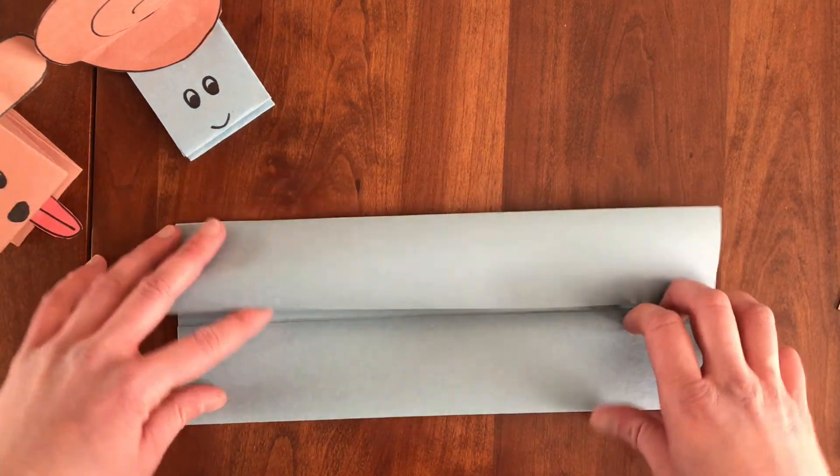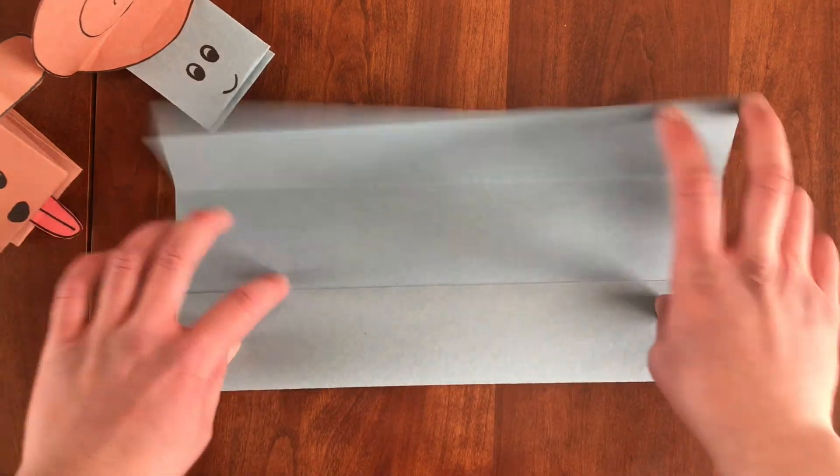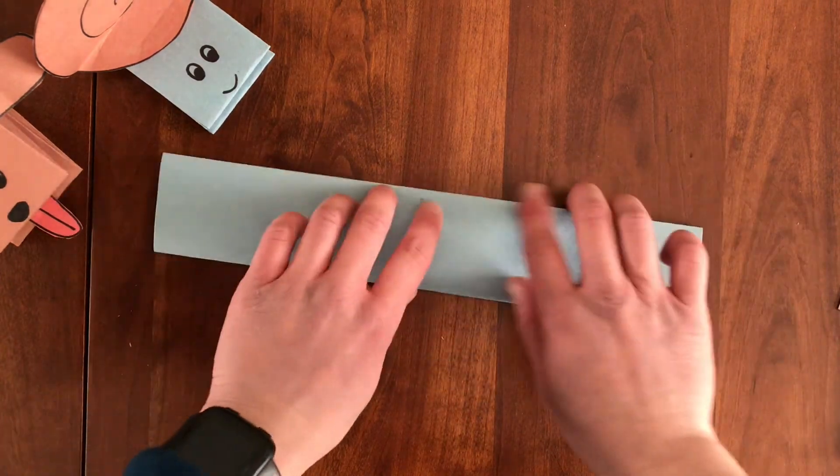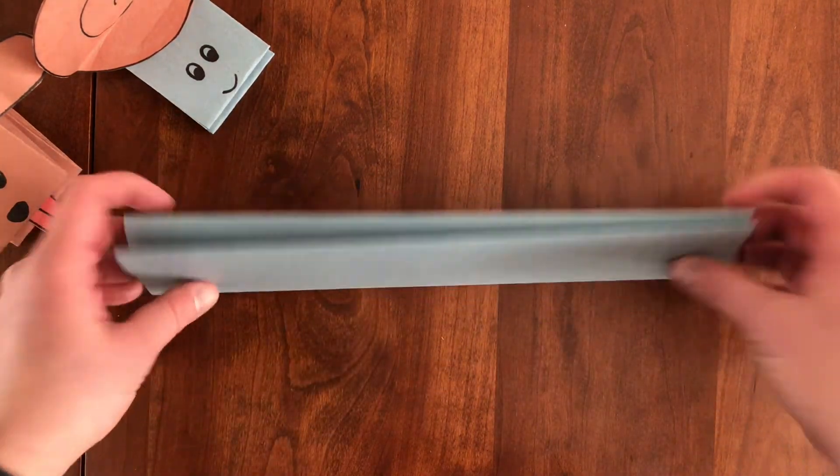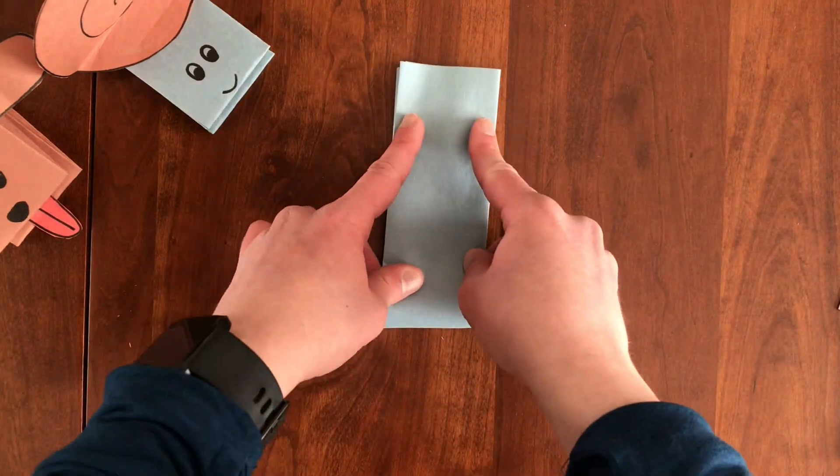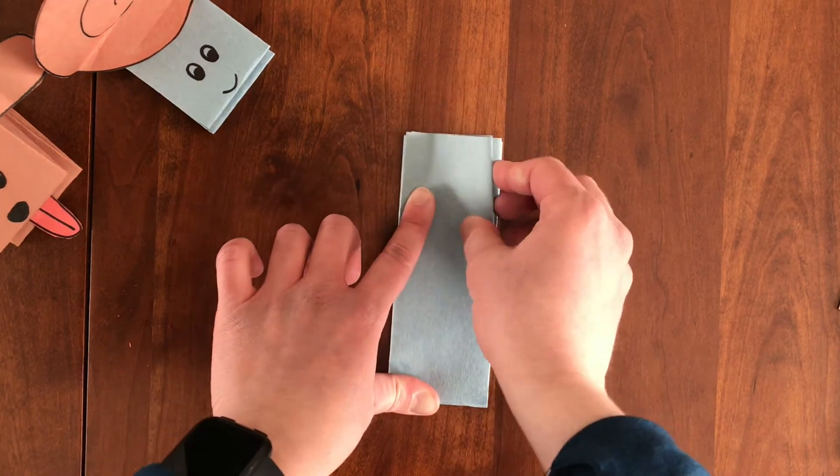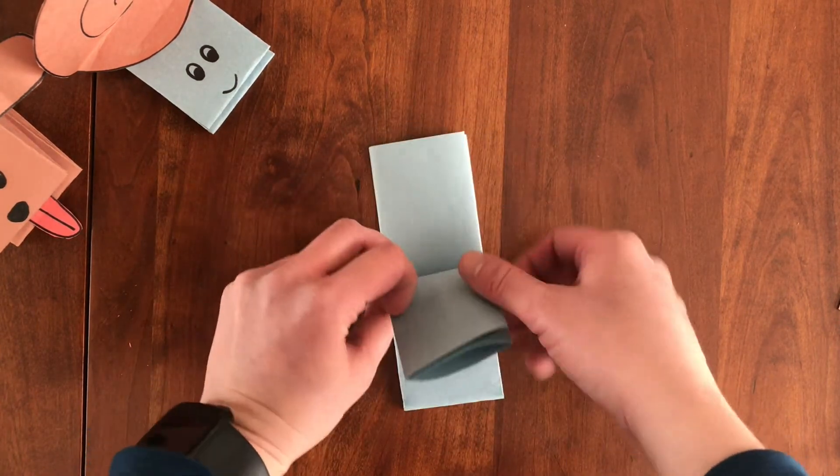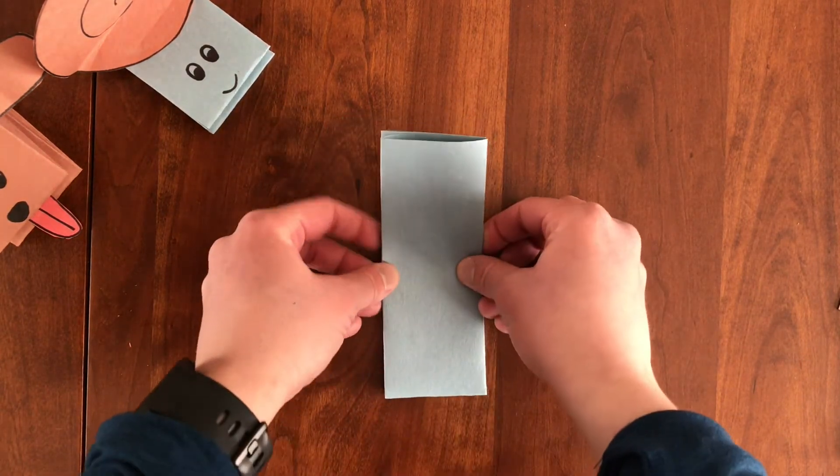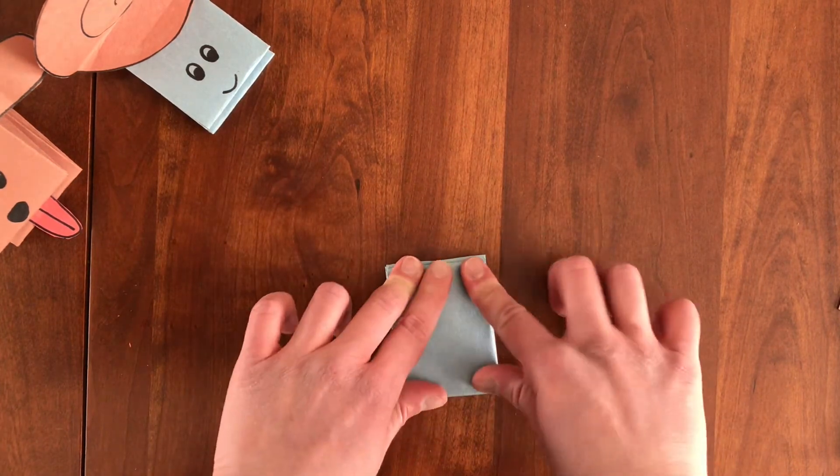So again, fold it in half once. Fold the bottom in to meet the middle. Fold the top in to meet the middle. And then close it. Now you have this long skinny piece. And you're going to use that and fold it in half. And then take the top part down to meet the bottom. Just like this. Then flip it over and take the top part down to meet the bottom.